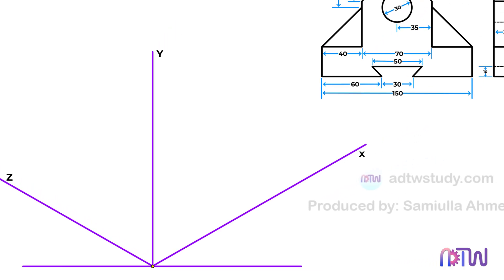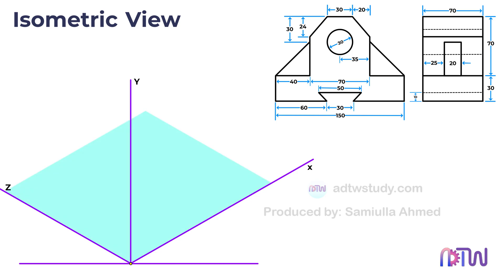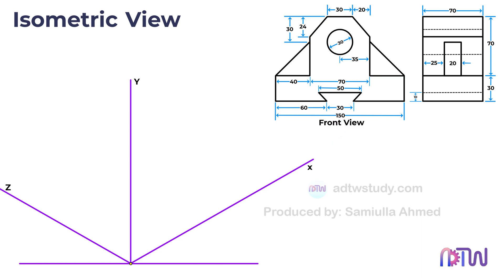With these three isometric axes in place, we can now construct the isometric view of the object. We need to decide whether to draw the front view in the xy plane or the yz plane. The front view should only be drawn in these two planes and never in the xz plane. The top view is always drawn in the xz plane. In this video we will be utilizing the first angle method to solve the problem.